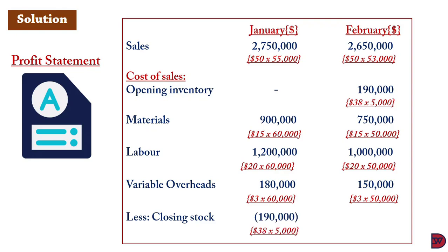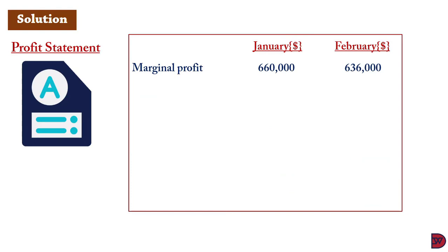We now less the closing stock. For January, the 5,000 units remaining (difference between 60,000 produced and 55,000 sold) multiplied by the marginal cost of $38 gives $190,000. For February, 50,000 produced plus 5,000 opening stock gives 55,000 available, but only 53,000 were sold, leaving 2,000 units; 2,000 × $38 = $76,000 closing stock. Deducting these from the cost of sales figures, we get marginal profits of $660,000 for January and $636,000 for February.